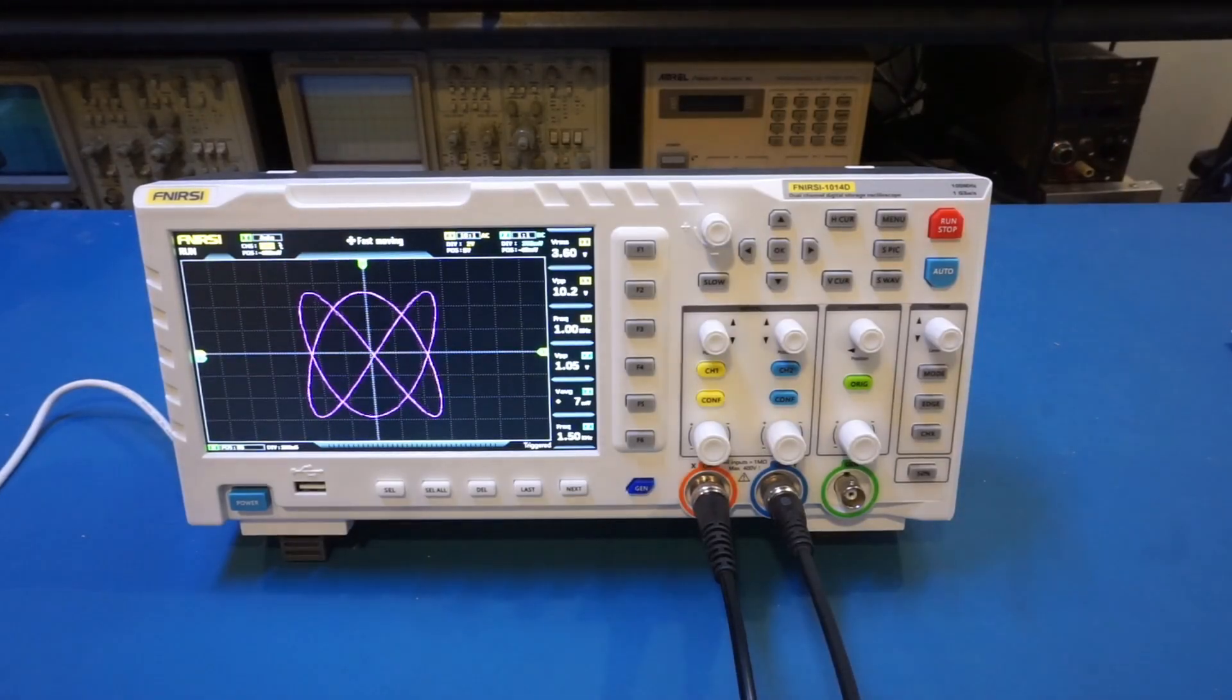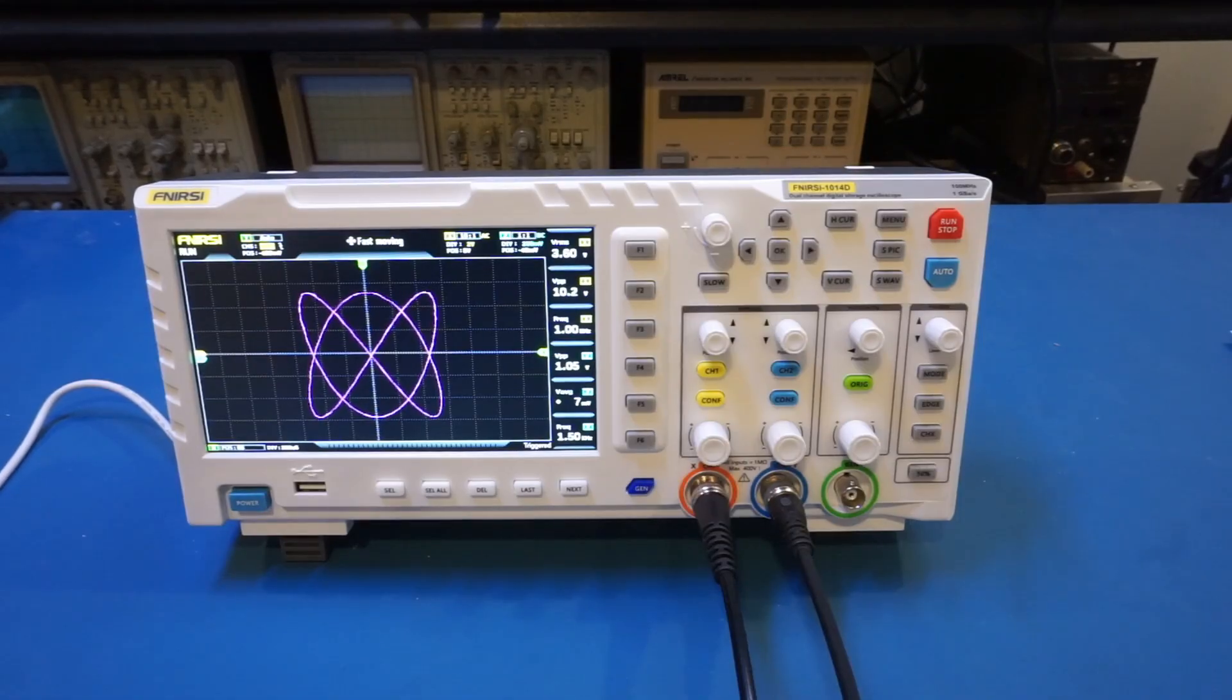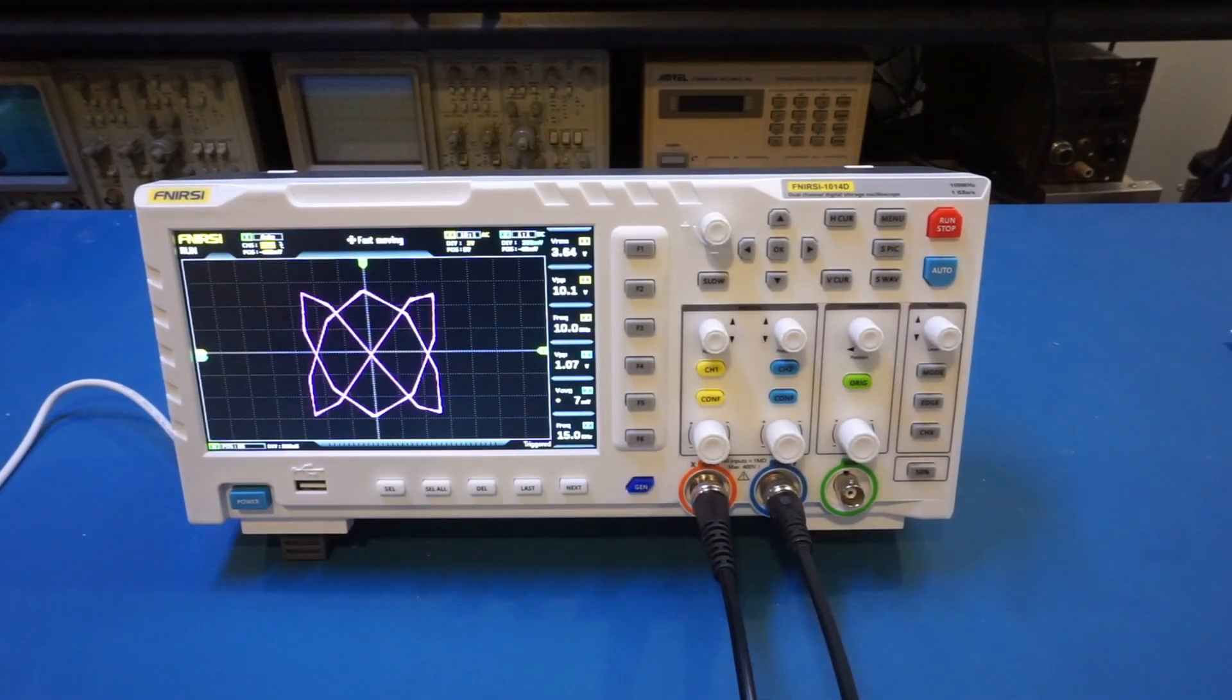And here is the scope in XY mode displaying a Lissajous figure. The acquisition rate in the XY mode is not that great. Right now I'm outputting 1 kilohertz and 1.5 kilohertz respectively for both of the channels, and you can see the figure. But if I increase the frequency a little bit more, you won't be able to see the figure anymore. For instance, right now we're at 10 kilohertz and 15 kilohertz respectively, and you can see that we already don't have enough sample points to show the figure correctly.